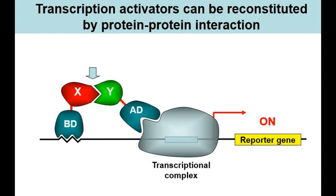If these two proteins can be created in separate vectors — for example, created in separate bacteria — and then you express these plasmids in a yeast organism, you will be able to see the presence of these proteins inside this yeast system. You then want to see if these proteins can affect gene expression inside the yeast in such a way that you can confirm the presence of this interaction.